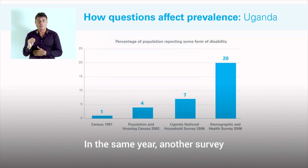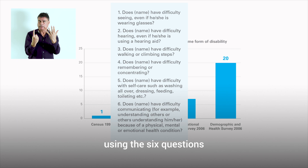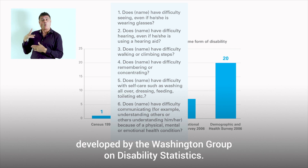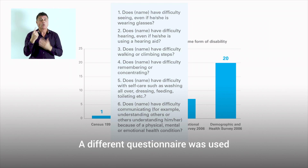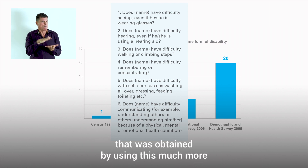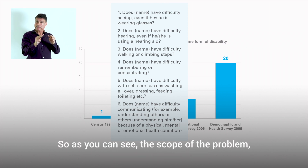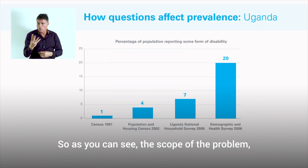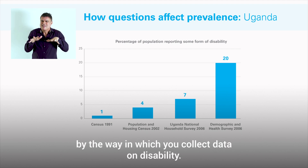In the same year, 2006, another survey inquired about persons with disabilities using the six questions developed by the Washington Group on Disability Statistics. A different questionnaire was used, and 20% was the prevalence obtained by using this much more comprehensive way of defining disability. As you can see, the size of your population is importantly affected by the way in which you collect data on disability.